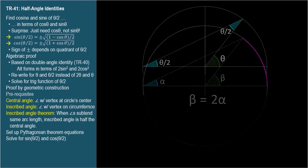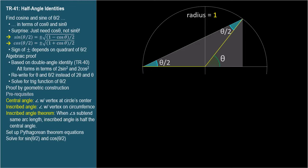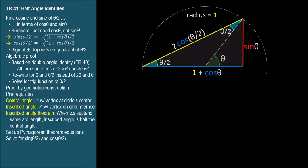Using this, we can prove the half-angle identity geometrically on a unit circle. We apply the Pythagorean theorem to a right triangle. The short vertical side is sine theta, and the horizontal bottom side is cosine theta plus 1. For the hypotenuse, we divide the upper isosceles triangle into two congruent right triangles, each with a hypotenuse of 1 (the radius). The sides adjacent to the theta over 2 angles must be cosine theta over 2, so the full hypotenuse length is 2 cosine theta over 2.